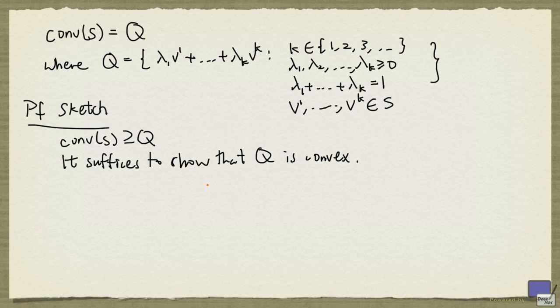So if Q is also convex, then Q must be the smallest convex set containing S, and so Q is equal to the convex hull of S.